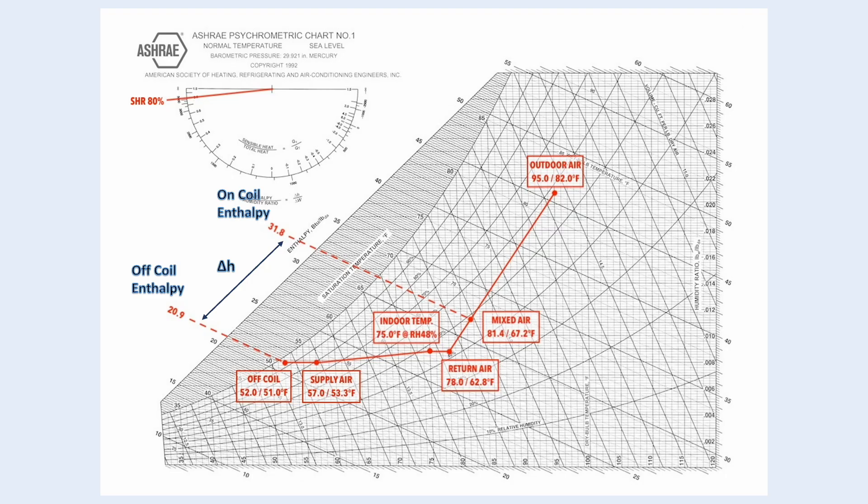To determine the on-coil and off-coil, we need to know several temperature points as shown in the chart. So, let's start with airflow calculation.